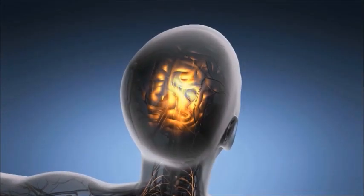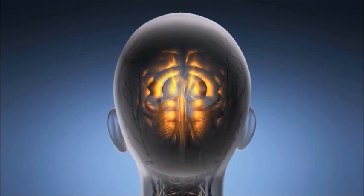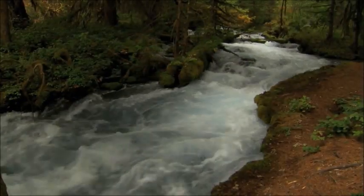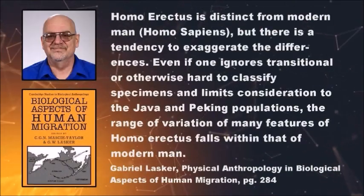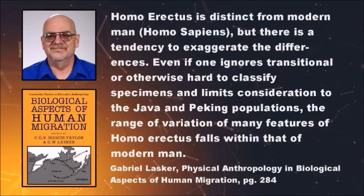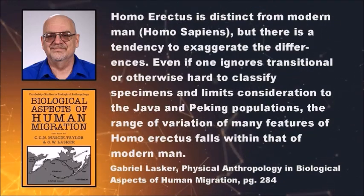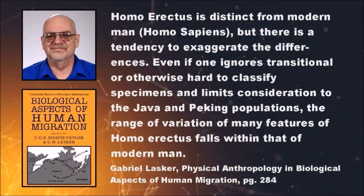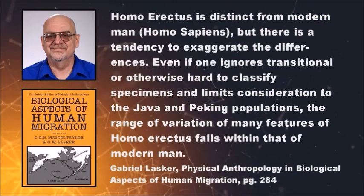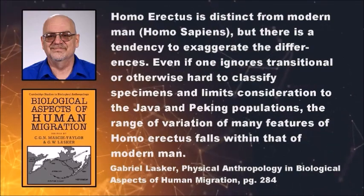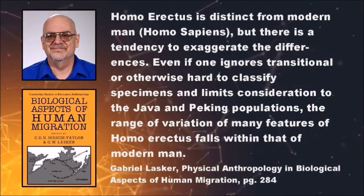Archaeology confirms that erectus had the intelligence of modern humans — we've discovered that erectus knew how to control fire, had sophisticated language, and even had the ability to sail across water. According to paleo expert Gabriel Lasker: 'Homo erectus is distinct from modern man, but there is a tendency to exaggerate the differences. Even if one ignores the transitional specimens, the range of variation of many features of Homo erectus falls within that of modern man.'